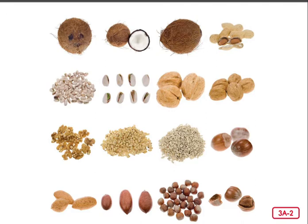You have already learned about different parts of a plant, and one of those parts is called the seed. Many plants begin with a seed. Seeds come in all shapes and sizes. The seeds from different plants look different. Look at all these different kinds of seeds. This one up here — that's a coconut. Yep, that's a seed.